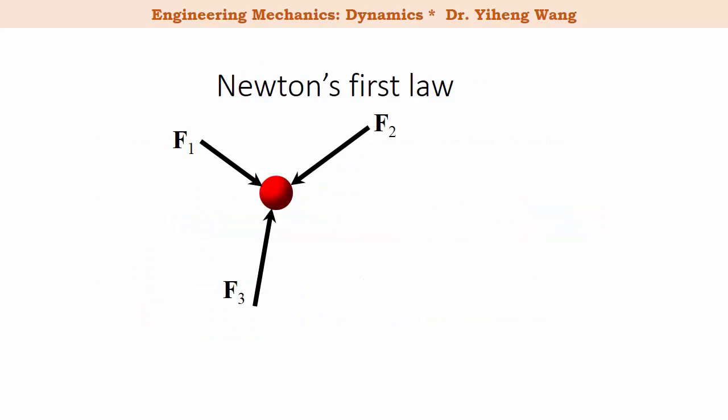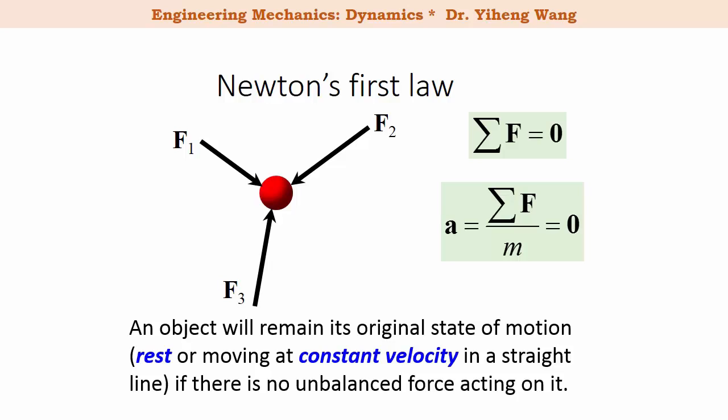Let's first look at Newton's first law. For a particle subjected to forces, if the sum of the force vectors equals zero, then the acceleration of the object, which equals resultant force over the mass of the object, is also zero. With no acceleration, the object will either be at rest or moving at a constant velocity with no direction change either, and this is called the state of equilibrium. This was the focus of the statics course.